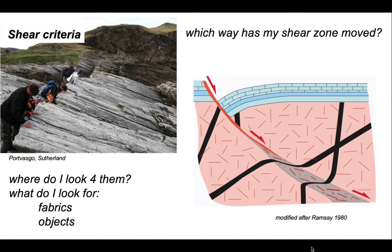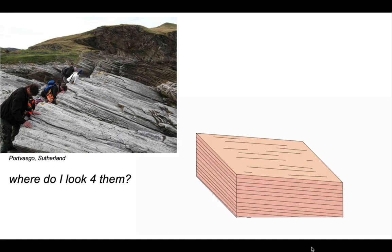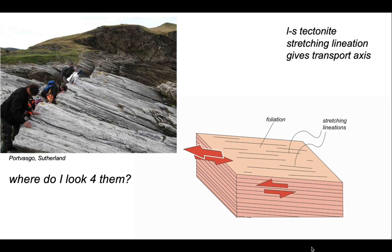Let's start with the question of where we look for shear criteria. Here we have some geologists in the field looking at platy rocks that form part of a shear zone, as shown in a block diagram. This material is formed by shear, so it's an LS tectonite — it has a stretching lineation, which is the L part of that term, and a foliation or schistosity, a planar fabric, which is the S part. We need to have an LS tectonite, and the key point is that the stretching lineation gives us an axis of displacement, a transport axis.